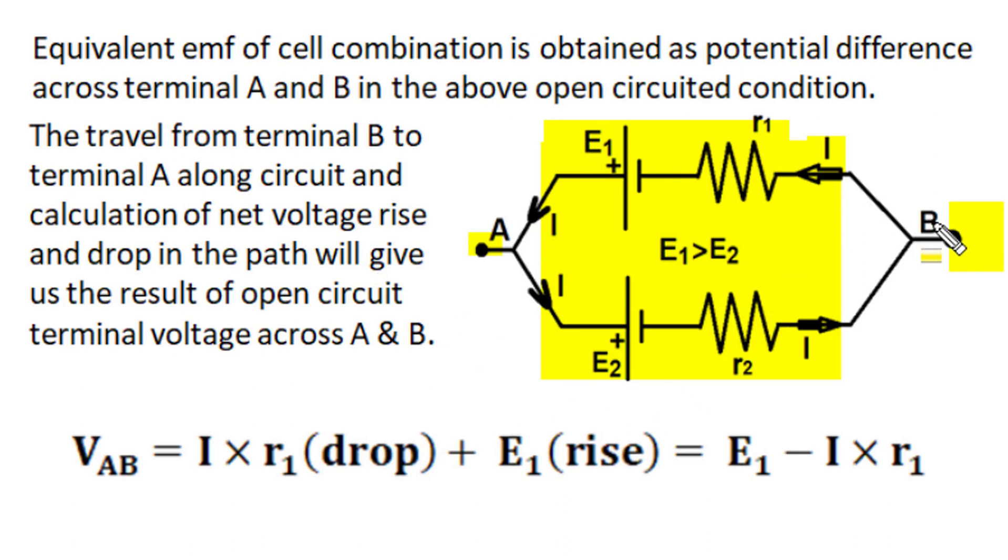By traveling from one terminal to another terminal along the circuit, on the way we have to calculate voltage rise and drop. The net calculation of voltage rise and voltage drop from terminal B to terminal A would become our potential difference across terminals A and B.